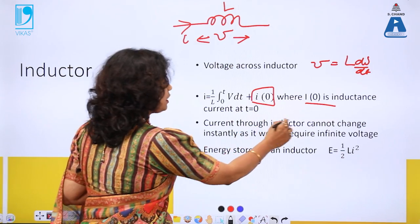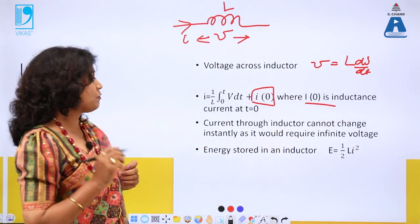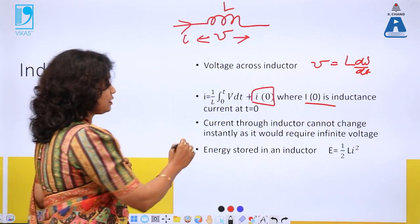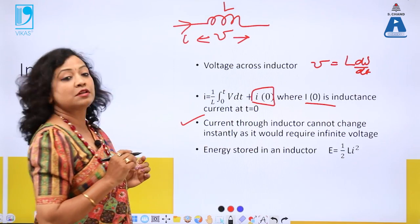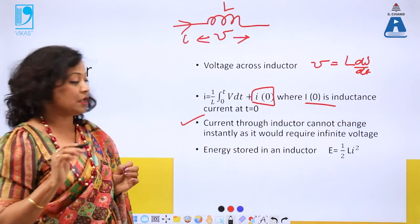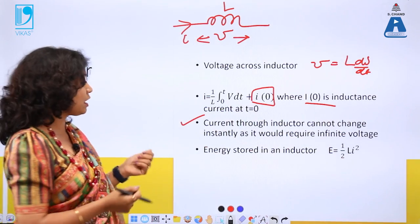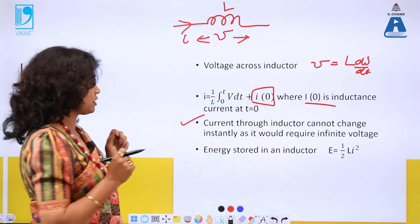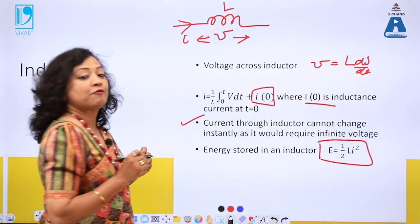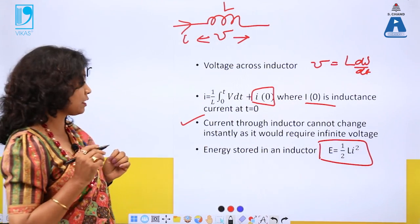The most important property of the inductor is that the current through it cannot change instantly — it requires infinite voltage to change instantaneously. Whenever the current is changed, it takes some time. The energy stored in an inductor is (1/2)LI², where L is the inductance value and I is the current flowing through the inductor.